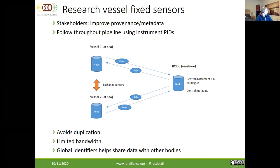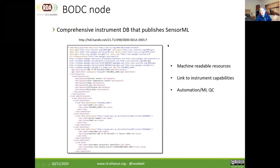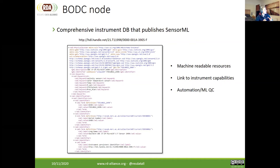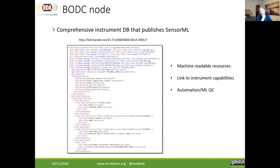Part of the reason to have this central node is to avoid duplication — vessels can exchange sensors between them, so we don't want vessels registering the same instrument. This linking of data to metadata on shore also works well with limited bandwidth: vessels won't want to send huge amounts of metadata with the data; they just send the data and the identifier, and we do all the linking on shore. Using global identifiers alongside our local identifiers also means we can be interoperable with international bodies. At the BODC node, we publish all our instruments using SensorML — machine-readable, machine-actionable metadata — to link instrument capabilities to the data and help with automation and potentially machine learning QC routines.